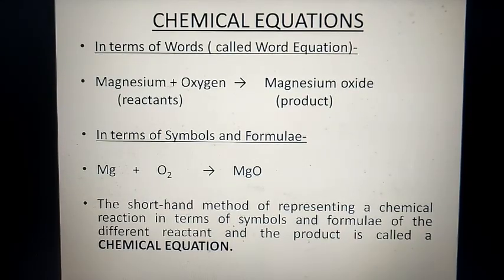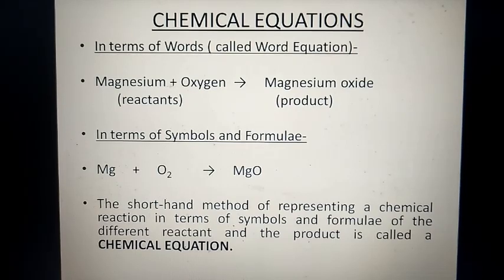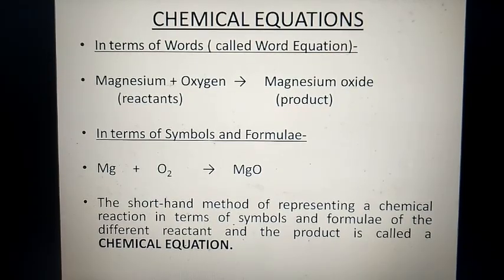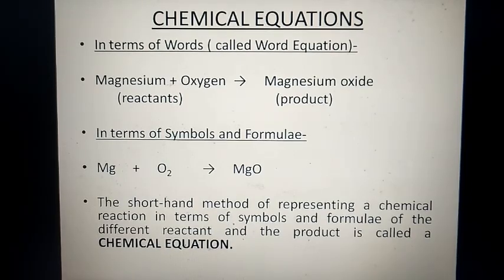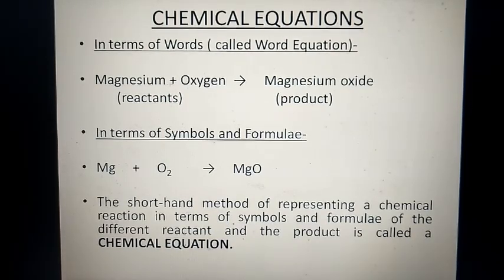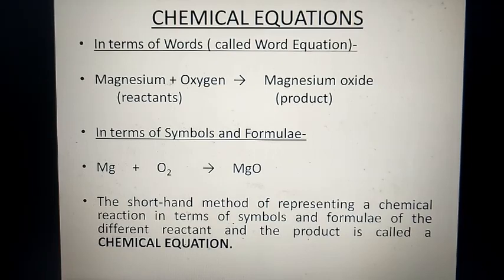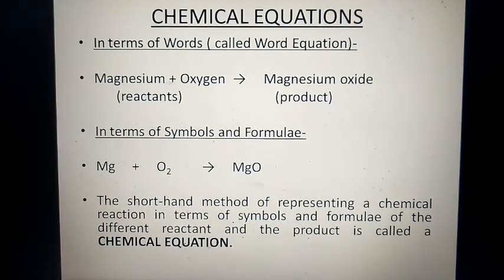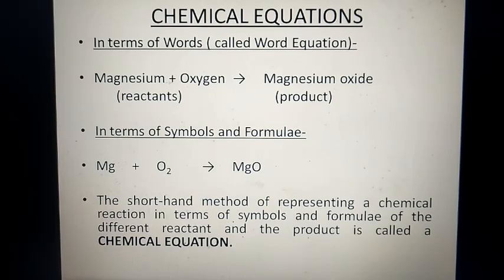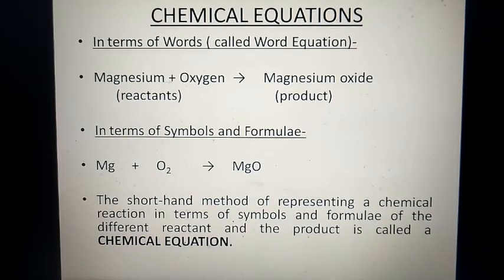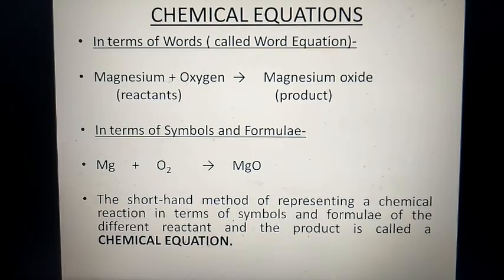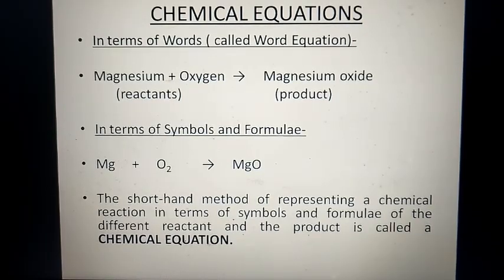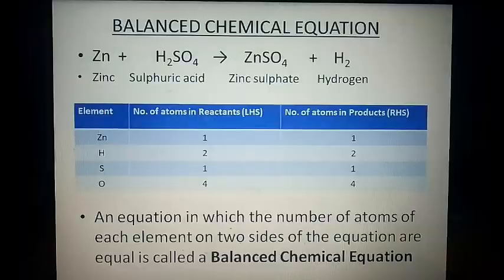The second method is in terms of symbols and formulae. For example, magnesium is Mg, oxygen is O2, magnesium oxide is MgO. So a chemical equation can be defined as a shorthand method of representing a chemical reaction in terms of symbols and formulae of the different reactants and products. In this chemical equation, we use formulas and symbols for the names of reactants and products.